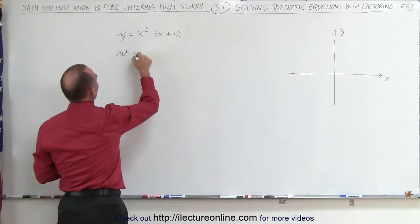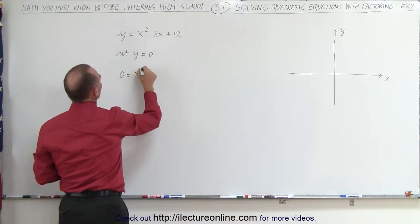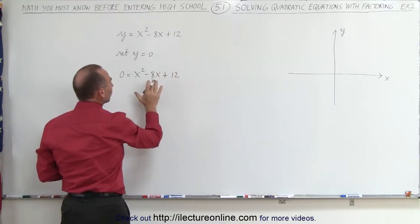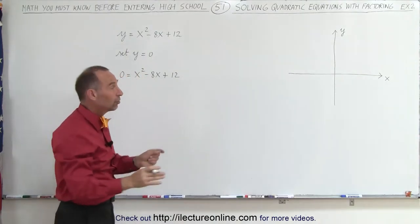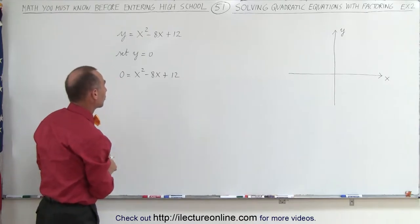Set y = 0, and we get 0 = x² - 8x + 12. When we look for the values of x that make this equation true, we find the places where the graph crosses the x-axis. That's what we mean by solving the quadratic equation.